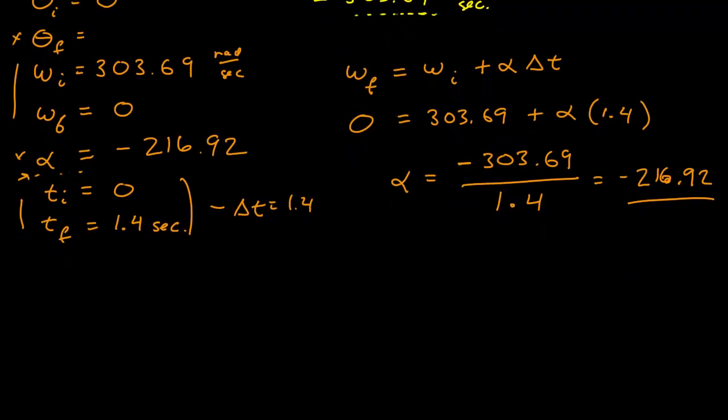Now let's proceed to the angle. From the kinematics, I know our final angle equals the initial angle plus the initial angular velocity times the time interval plus one-half angular acceleration times the time interval squared. I now know all of these parameters.